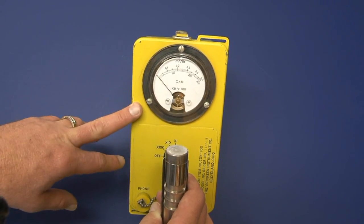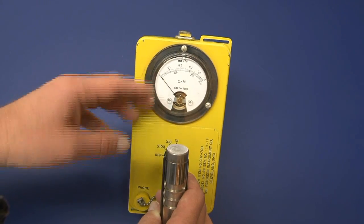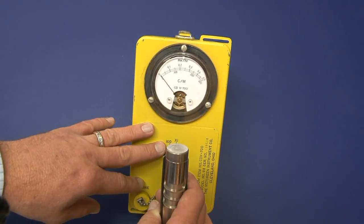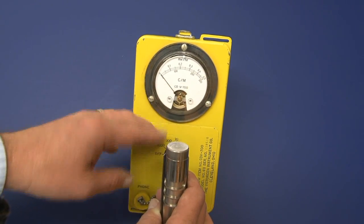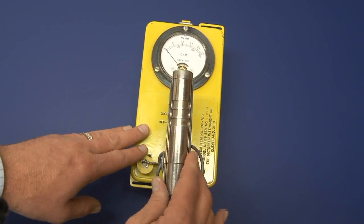To avoid that problem, a lot of the modern survey instruments that are out there, if they exceed the capability of the instrument, they'll peg high and stay high. The needle won't fall back down to zero.